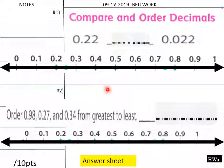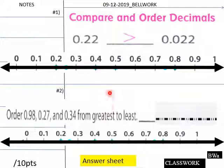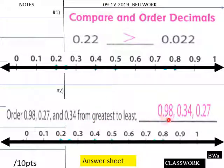Welcome back. Our solutions for today's bell work: 0.22 is greater than 0.022. The ordering from greatest to least would be 0.98, 0.34, and 0.27. Students, you could either put that on your number line or put it in the blank.